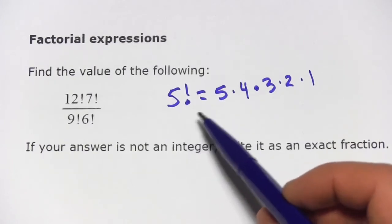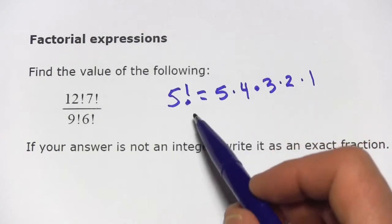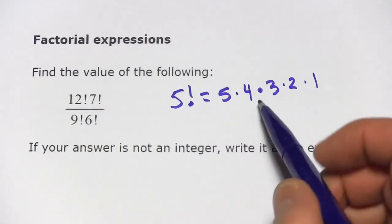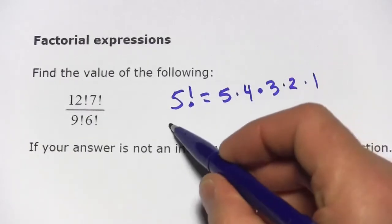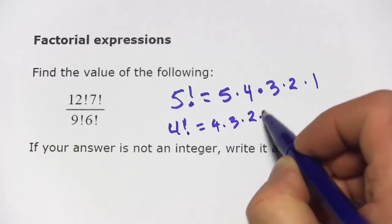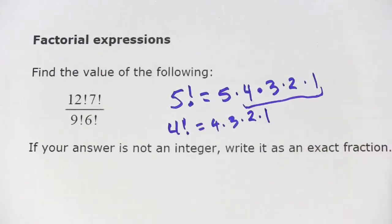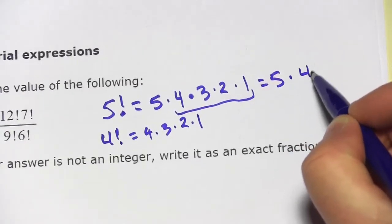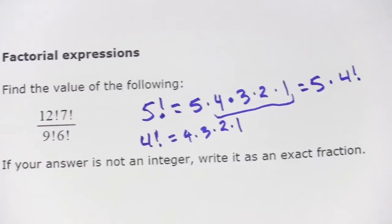As you can imagine, factorials get big pretty quickly. One of the cool things about factorials is that any larger factorial has smaller factorials inside of it. So 4 factorial is 4 times 3 times 2 times 1. That's this. So you could say that 5 factorial is actually 5 times 4 factorial. And that is going to be really useful in solving these problems.